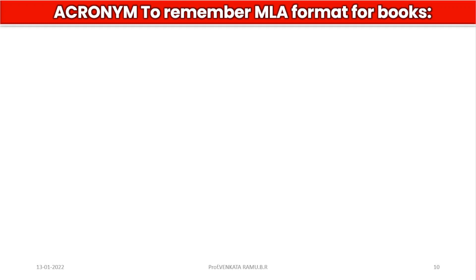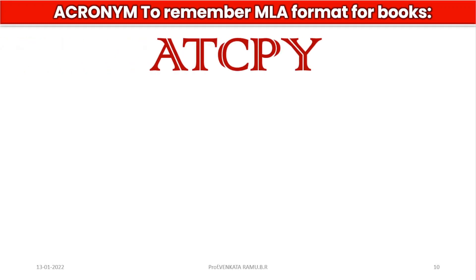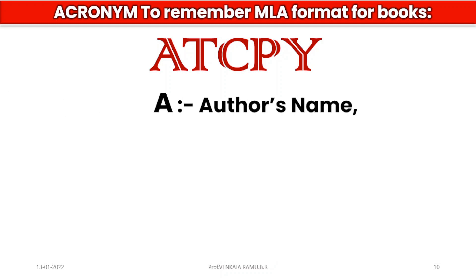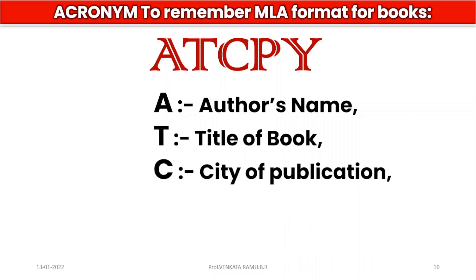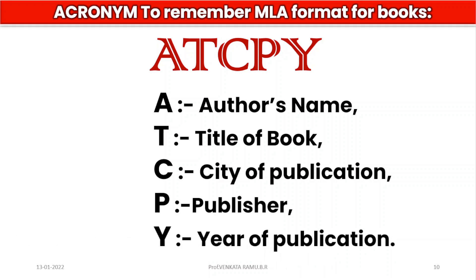Here is an acronym so that you could easily remember: the acronym is ATCPY. A stands for author's name, T stands for title of book, C stands for city of publication, P stands for publisher, and Y stands for year of publication. With these letters you can easily remember the structure of writing bibliography in the MLA format for books.